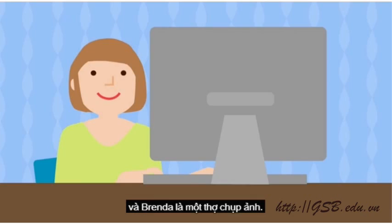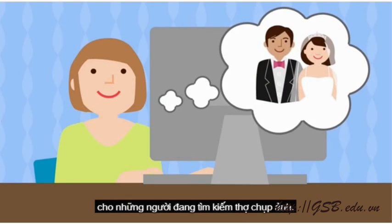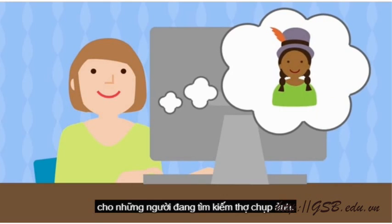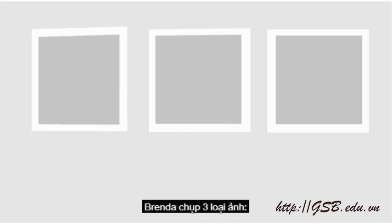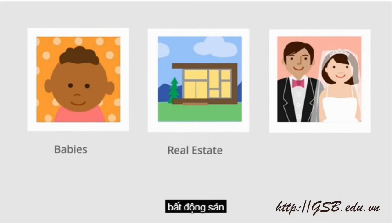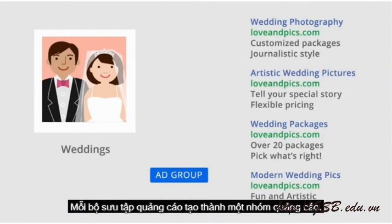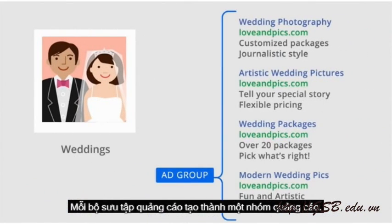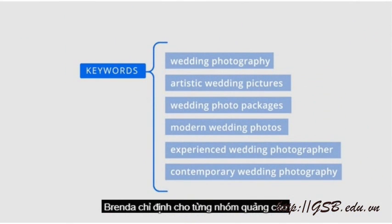Brenda uses AdWords to advertise online to people who are looking for a photographer. She takes three types of photos: babies, real estate, and weddings. She uses different ads for each area of her business. Each collection of ads makes up an ad group.